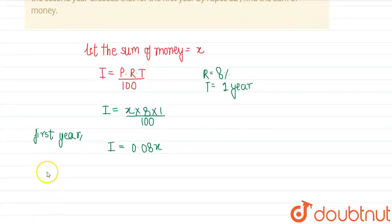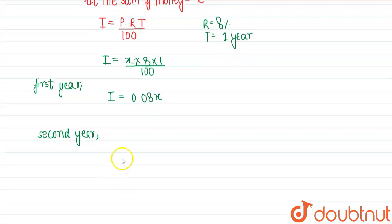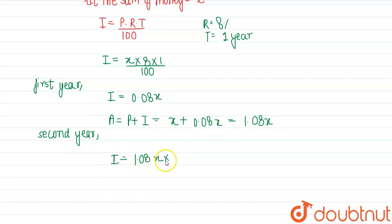Now for the second year, the principal will be the amount that it reaches in the first year. Amount is principal plus interest of that year, so this is x + 0.08x = 1.08x. This will be the principal for the next year, so this will be 1.08x × 8 × 2 / 100.